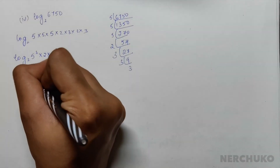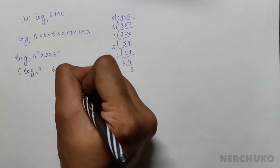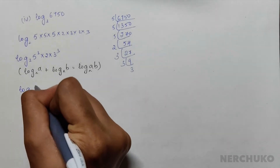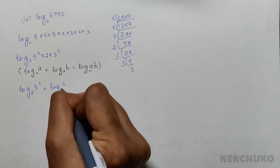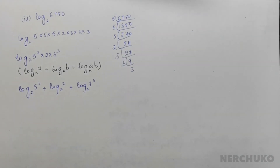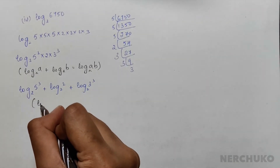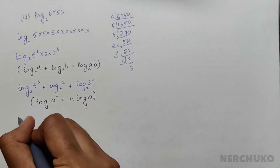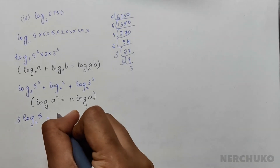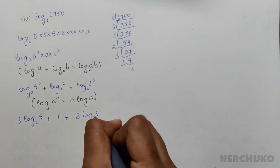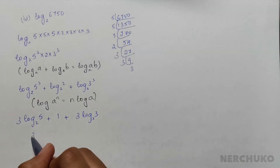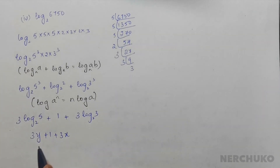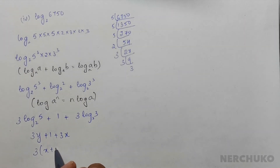Applying the product rule, we get log 5³ to base 2 plus log 2 to base 2 plus log 3³ to base 2. Using the power rule — log aⁿ = n × log a — this becomes 3 × log 5 to base 2 plus 1 plus 3 × log 3 to base 2. Since log 5 to base 2 is y and log 3 to base 2 is x, we get 3y + 1 + 3x, or rearranged: 3x plus 3y plus 1.